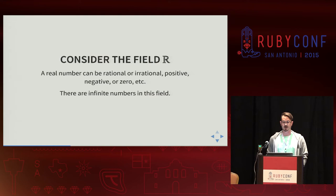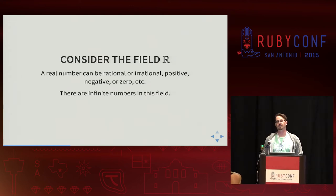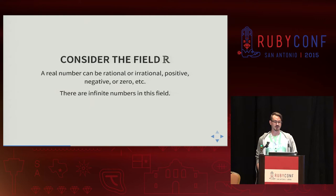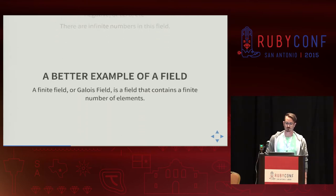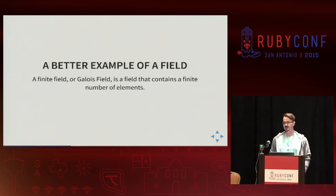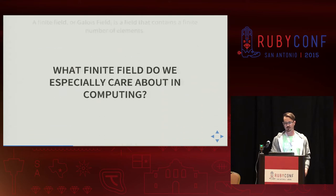There are infinite numbers in the field of real numbers, so it's kind of hard to understand it in terms of a matrix. You can also think of the field of real numbers as what's on a number line. There's a better example of a field that we use a lot in computing — we call this a finite field, or a Galois field. It's a field that contains a finite number of elements. The specific one I'm thinking of is Galois field two, which we use for binary representation — it's a finite field with only two elements: zero and one.